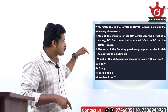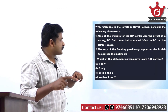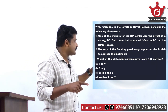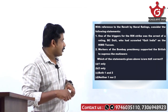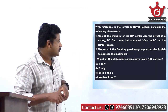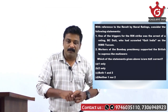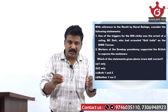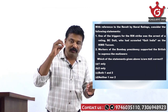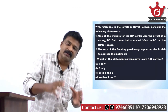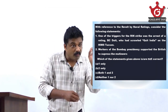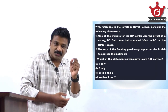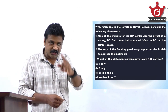This is a two-statement type question. First statement: one of the triggers for the RIN strike was the arrest of rating BC Das, who had scrolled 'Quit India' on HIMS Talwar. The problem is certain facts are registered in the mind. Without reading the statement completely, you will come to a conclusion that the statement is correct, because you notice the name BC Das and the words 'Quit India.' But read the statement completely.